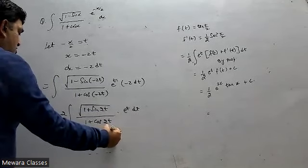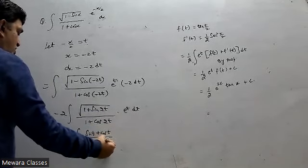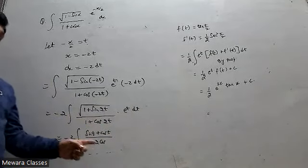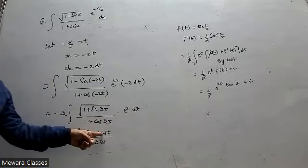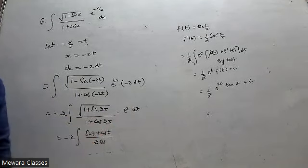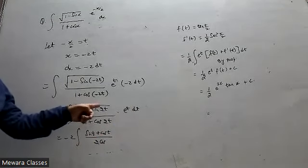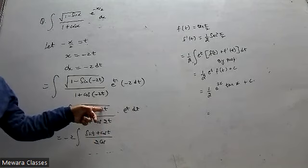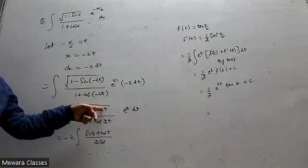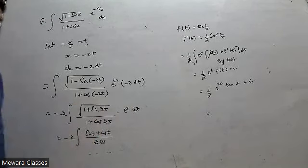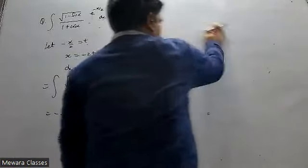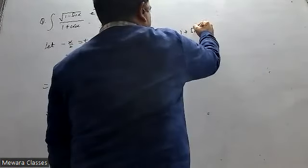So cos t plus cos t gives us 1 plus sin 2t upon 1 plus sin 2t.